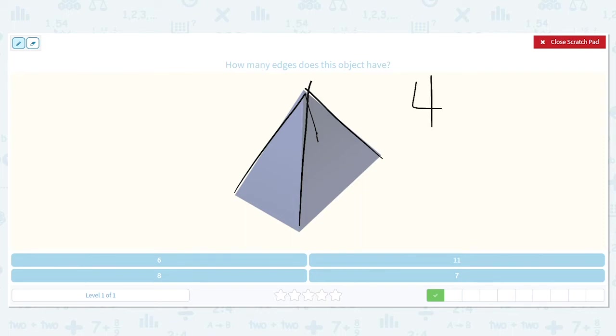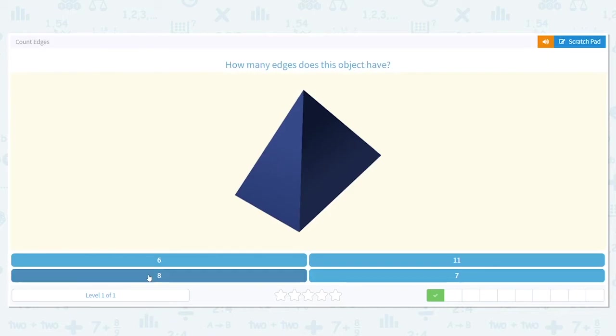Now let's do the bottom. One, two. And now it's hard to see. Remember, it's a rectangle on the bottom. So I have two more sides. So one, two, three, four on the bottom. So in all, how many edges does this rectangular pyramid have? It has eight. Good job.